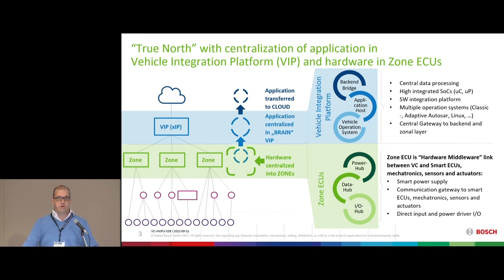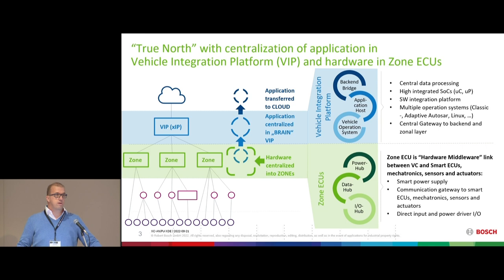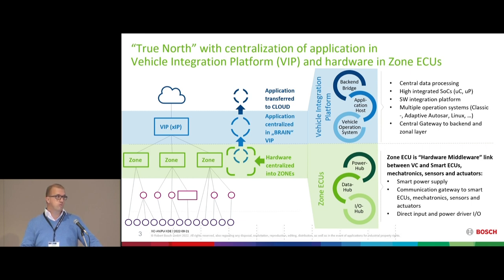There is also an I/O hub. You have a lot of small body electronics attached to a zone controller — seat adjustment, door, window lift, and so on — that all need to be driven. You also have buttons to read and small sensors. At the vehicle computer side, this is where the brain of the vehicle is, where you want fast update cycles, where you build your application, where the processing power sits. Ideally, all application code runs there and no application code runs in the zone.